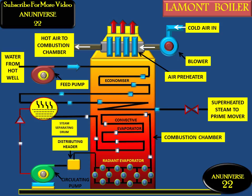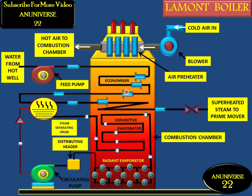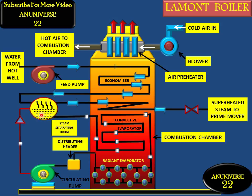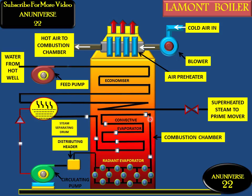The temperature of water increases and this water is forced into the evaporator tubes. The feed pump supplies water to the economizer; from the economizer it goes into the steam separating drum. In the steam separating drum there is a mixture of steam and water. From there, water is transferred to the centrifugal pump, and from the centrifugal pump, with the help of the distributing header, water is distributed to the evaporator tubes inside the combustion chamber.